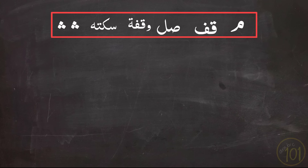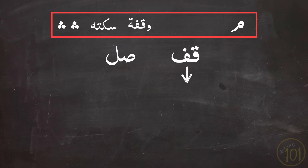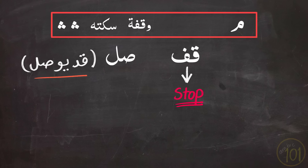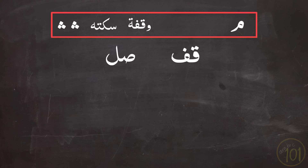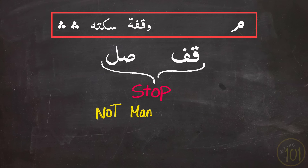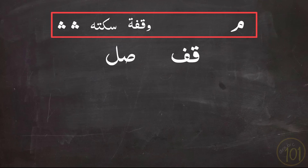Then we have Qif and Sal, which both instruct you to stop. Qif means to stop, and Sal is short for qad yusal, meaning it is possible to continue — but it is still better to stop at that point. So both tell you to pause, but it is not a mandatory stop. The difference between them is only the degree at which you should stop.